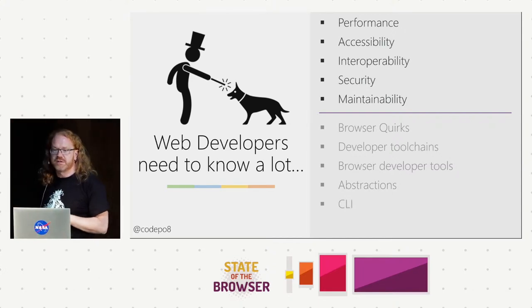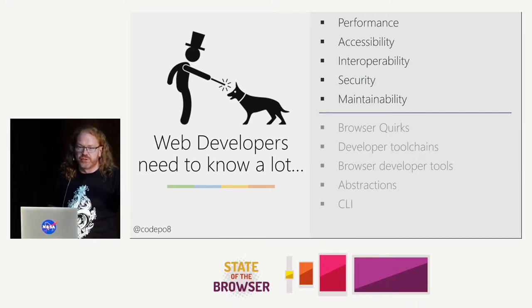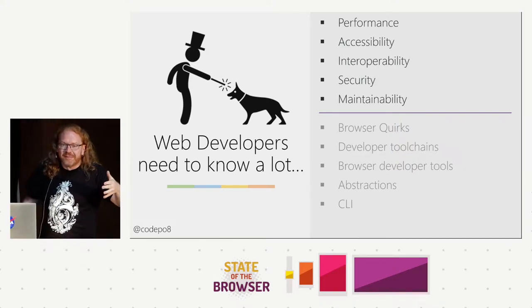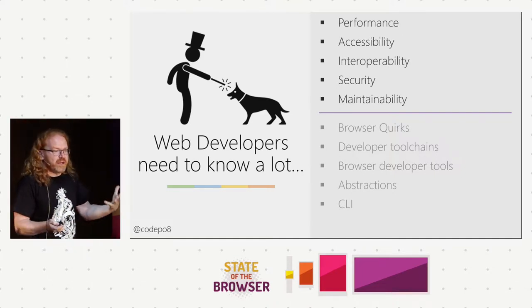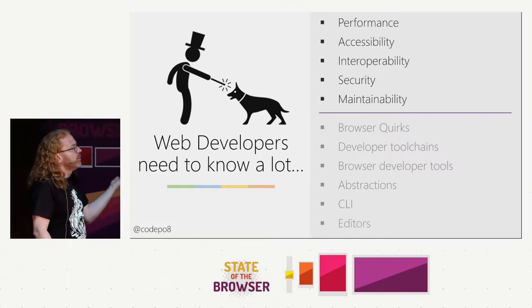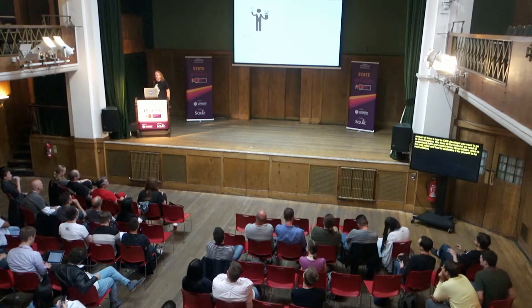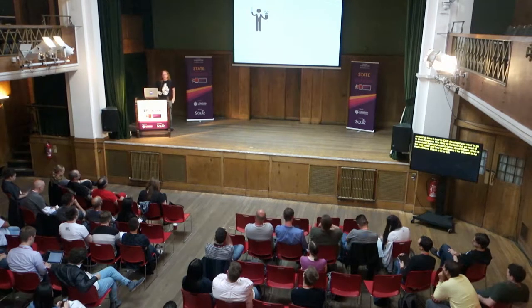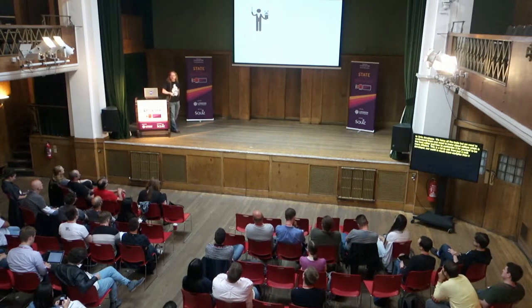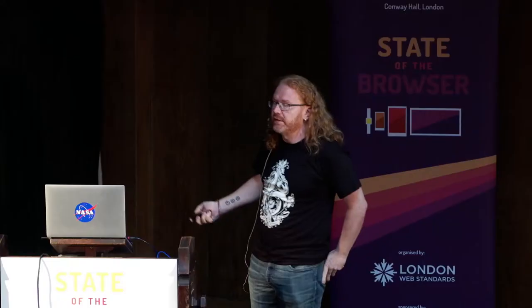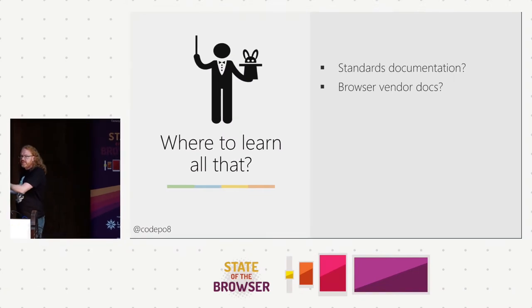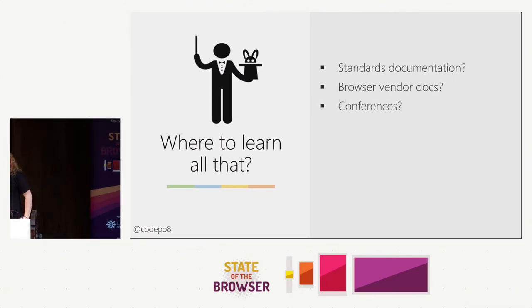We have all these build tools that make us more effective but we need to understand them. We need to know editors and how to customize them for efficiency. This is a lot to ask for just a web developer — our world has become much more complex. So where do you learn? Standard documentation? If you suffer from insomnia, great. Browser vendor docs? They might be skewed towards a certain browser's ideas and business models. Conferences? They don't scale. Books? Outdated by the time they come out. Workshops? Even more time, even more expensive.